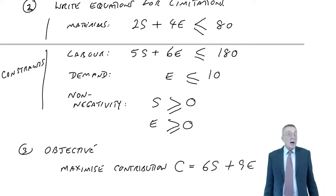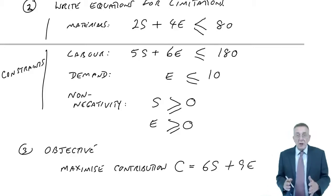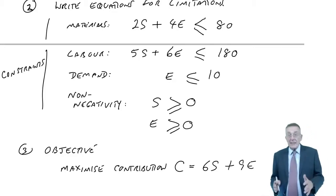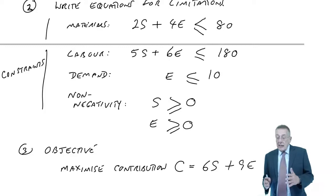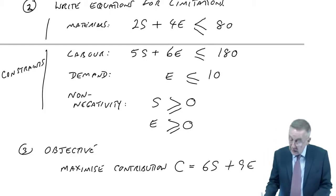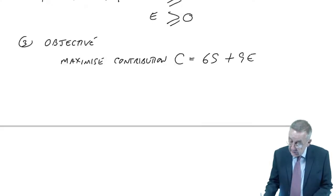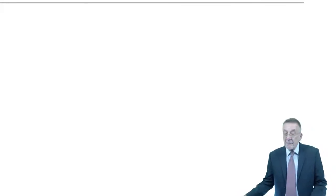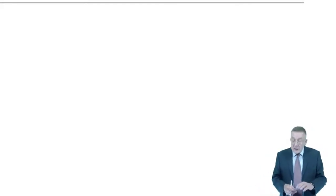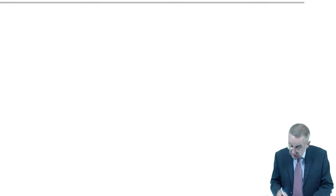And I did say, although there are other approaches, the only approach you can and will be examined on in paper F5 is the graphical approach. So would you believe it? We're going to draw a graph. Now, it's not the easiest thing for me on this, but I'll try and be as neat as I can. I can't show graph paper here, unfortunately.